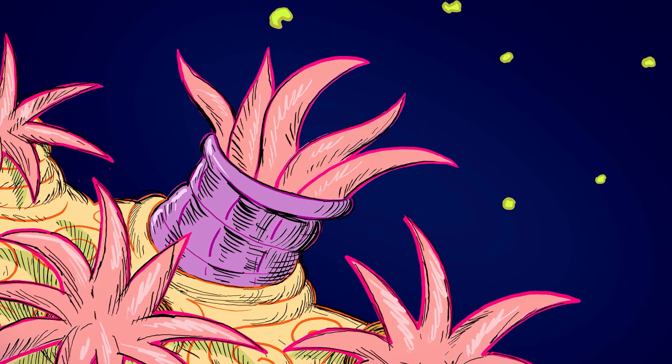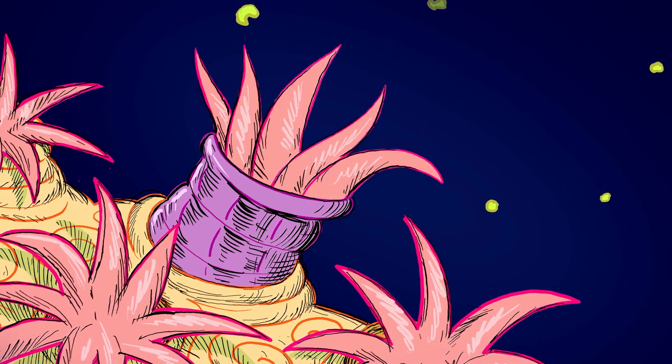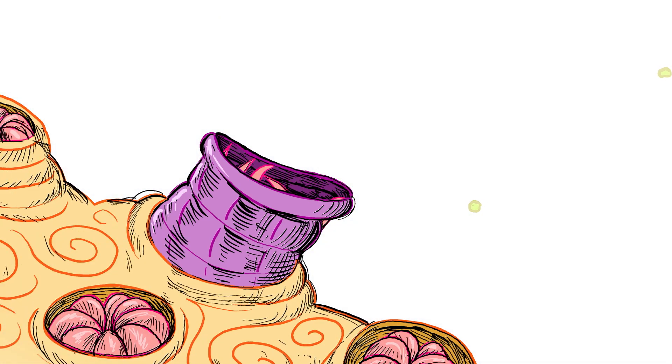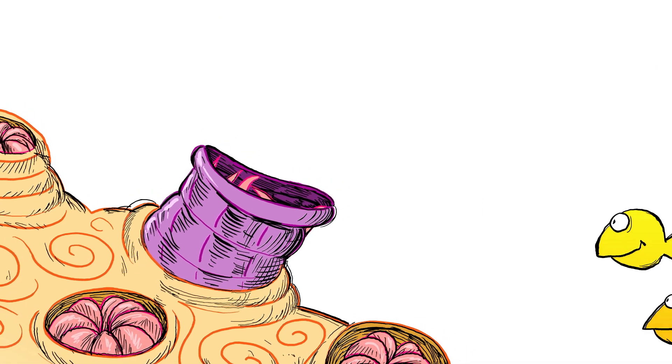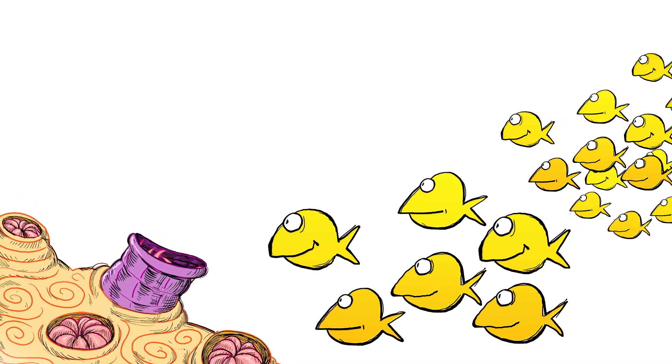Inside the tissue of each polyp lives a kind of algae, which uses sunlight to synthesize food for the polyp. The polyp and the algae are dependent on one another for food and shelter.